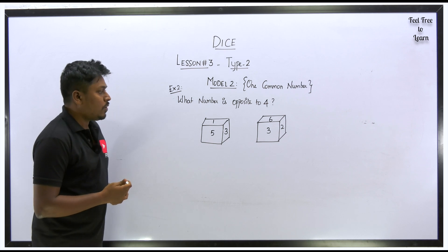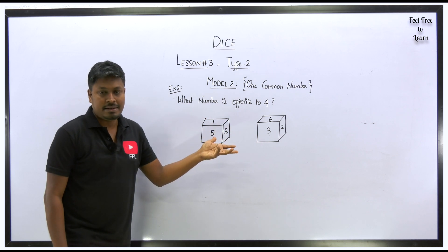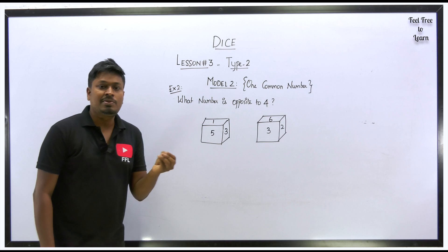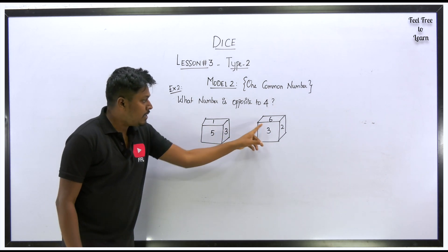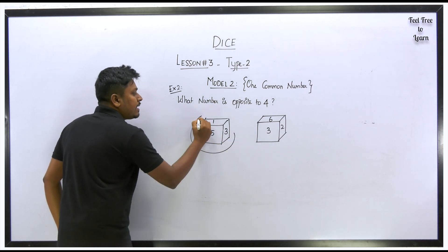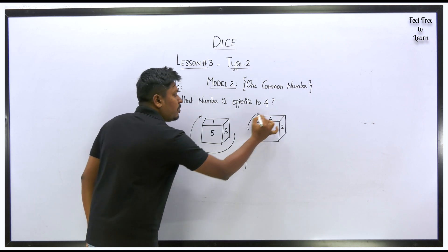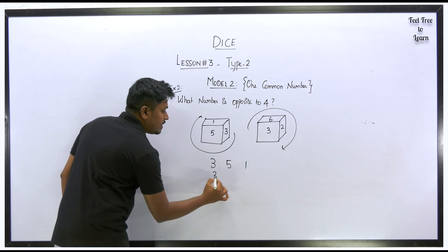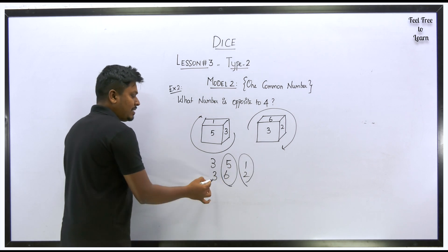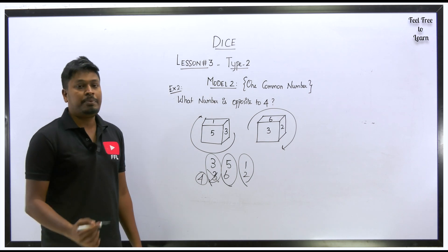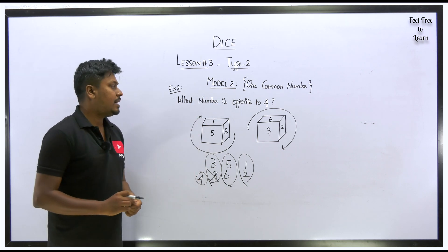Example 2 from Model 2: what number is opposite to 4? Even though 4 does not appear in the diagrams, do not conclude the answer cannot be determined. Check for a common number — the diagrams show 1, 5, 3, 6, 3, 2 — the number 3 is common. Starting clockwise from 3 in diagram 1: 3, 5, 1. Starting clockwise from 3 in diagram 2: 3, 6, 2. So 5 is opposite to 6, and 1 is opposite to 2. The remaining number is 4, so 3 is opposite to 4. Answer: opposite to 4 is 3.